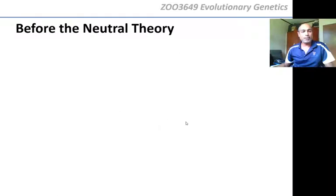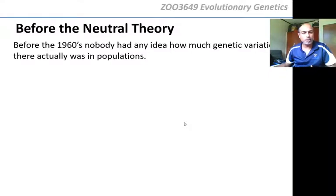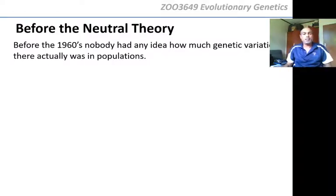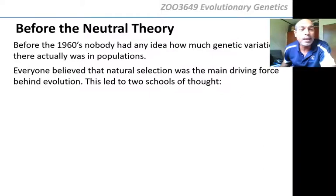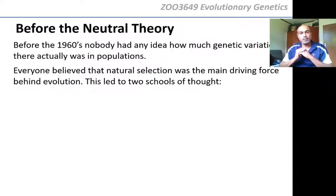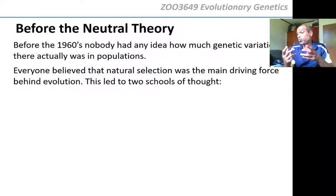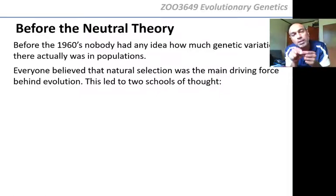Before the neutral theory, which came in the 1960s, nobody actually had any idea how much genetic variation there was in a population. Before 1960, there was no actual way to measure genetic variation directly. You could only measure it by looking at the phenotype — pink flowers, blue flowers, and so on — but you could not get the DNA and look at what it was saying, because we didn't know how to do it.